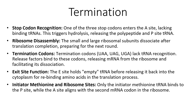Regarding initiator methionine and ribosomal sites: only the initiator methionine tRNA binds to the P site, while the A site aligns with the second mRNA codon in the ribosome. So we have three sites: the A site, the P site, and the E site.